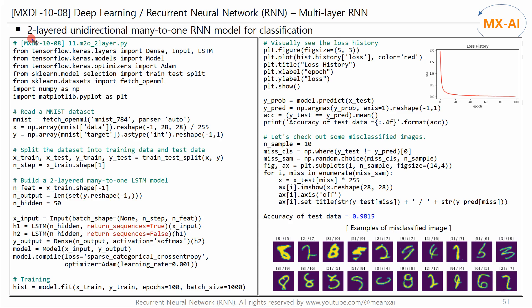Let's implement this model with Keras. We'll focus on the code that implements the recurrent neural network. Create an input layer and two LSTM layers. Feed X input into the first LSTM layer, then feed the output of the first LSTM H1 into the second LSTM. Set the return_sequences argument to true in the first LSTM and to false in the second LSTM. The shape of H1 is (None, 28, 50), where None is the batch size, 28 is the number of time steps (rows in the MNIST image), and 50 is the number of hidden neurons. The shape of H2 is (None, 50).